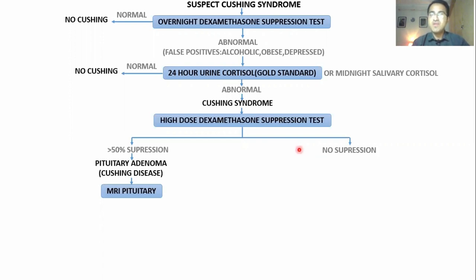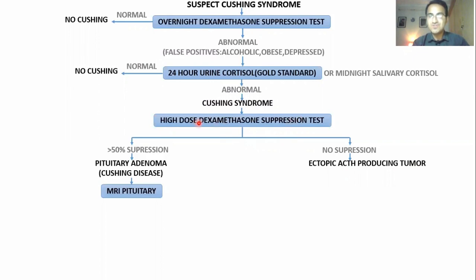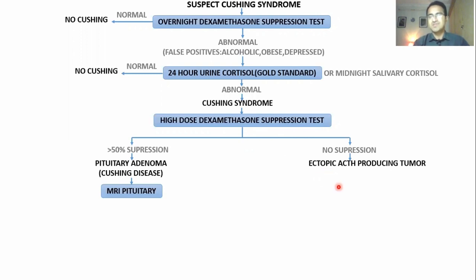Sometimes there is no suppression with high-dose dexamethasone. This means there is ectopic ACTH secretion. ACTH from a pituitary adenoma can be suppressed because negative feedback works on the pituitary. But an ectopic ACTH-producing tumor cannot be suppressed with high-dose dexamethasone. So high-dose dexamethasone suppression tells us whether the ACTH source is in the pituitary or is an ectopic ACTH-producing tumor.